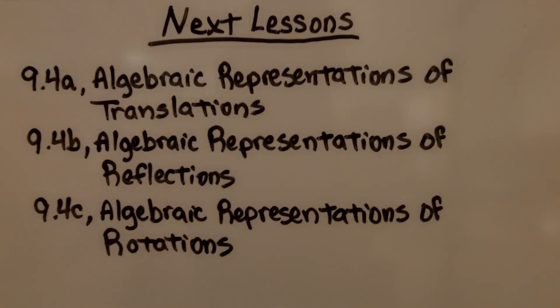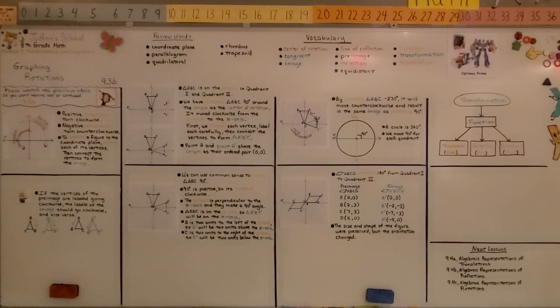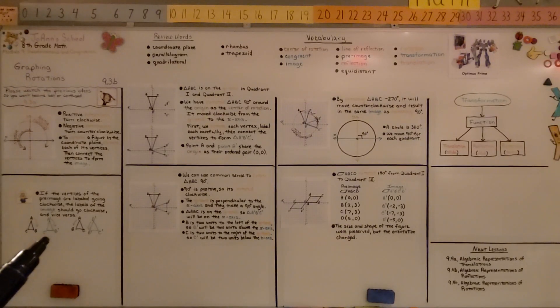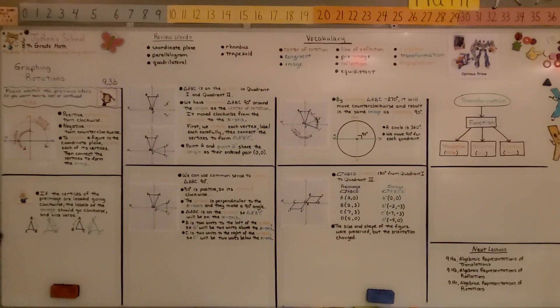We're finished with lesson 9.3 and moving on to 9.4. We're going to learn how to algebraically represent translations, reflections, and rotations. Make sure you label your image correctly, going counterclockwise or clockwise the same direction as the preimage. Have a great day, and join me for 9.4. Bye.